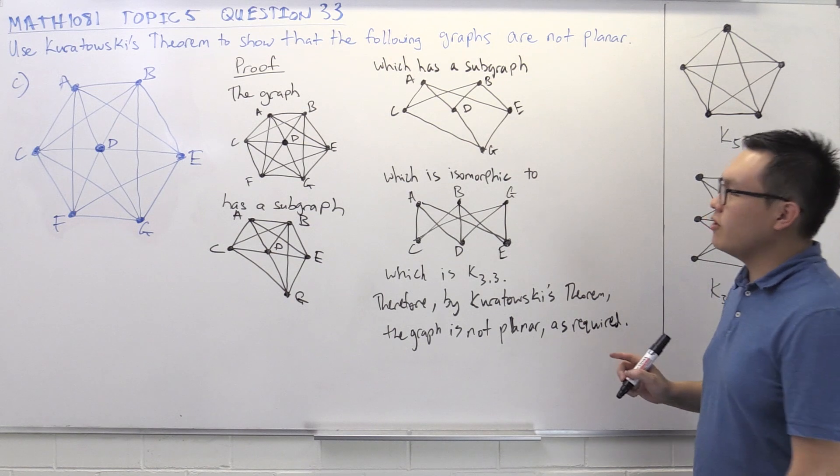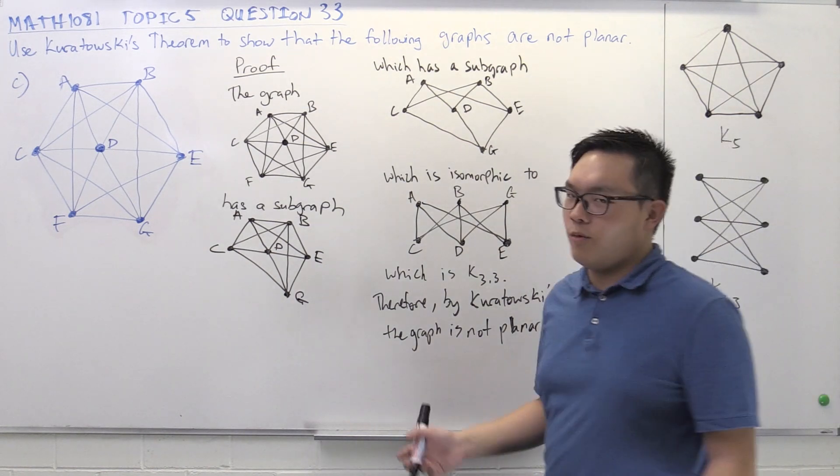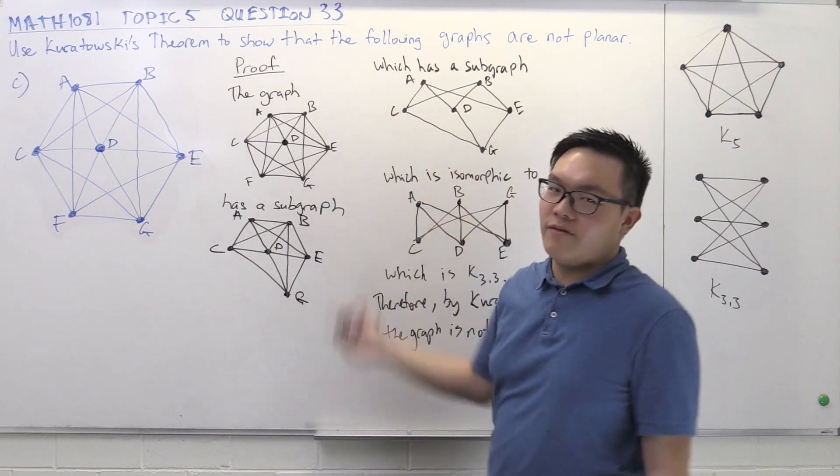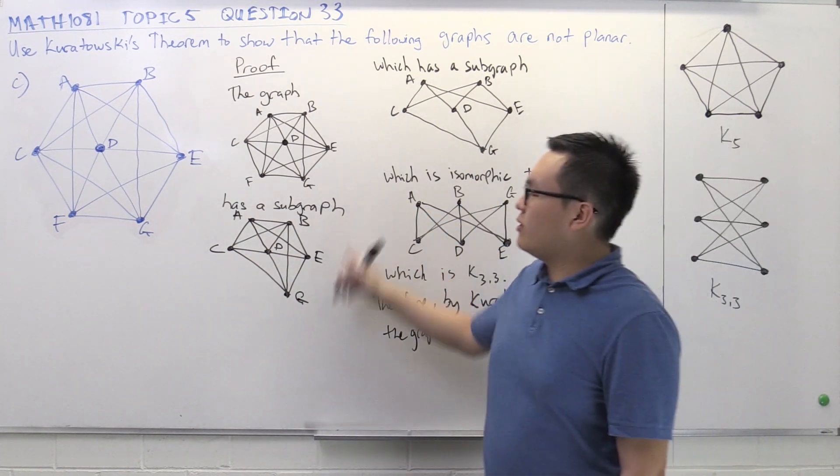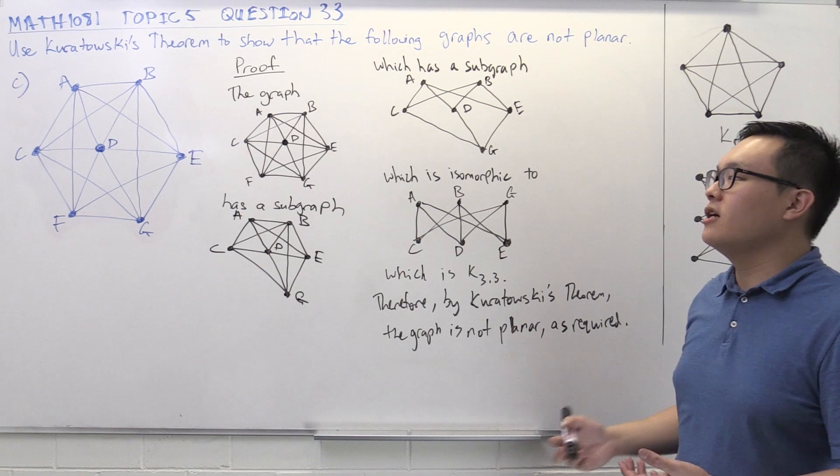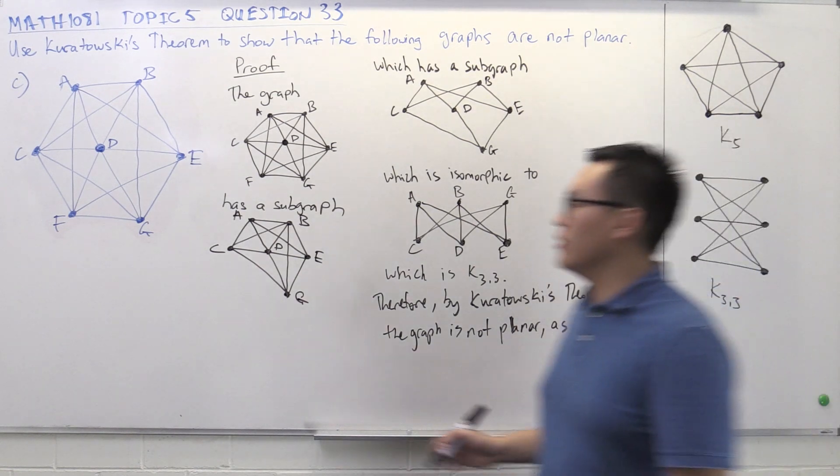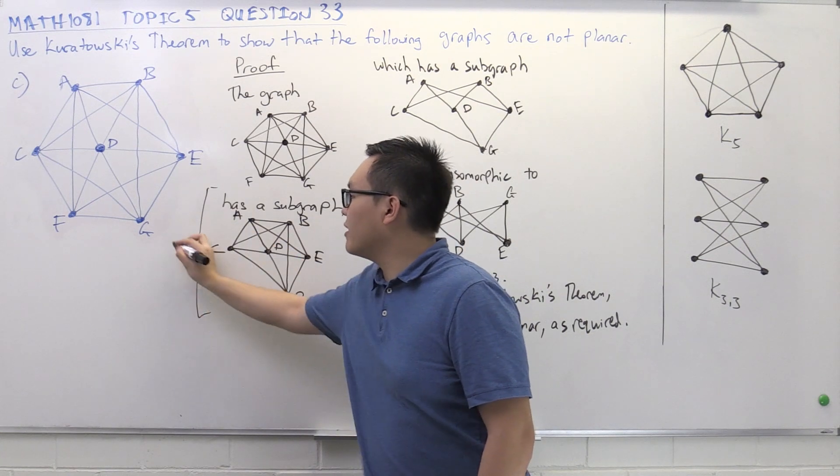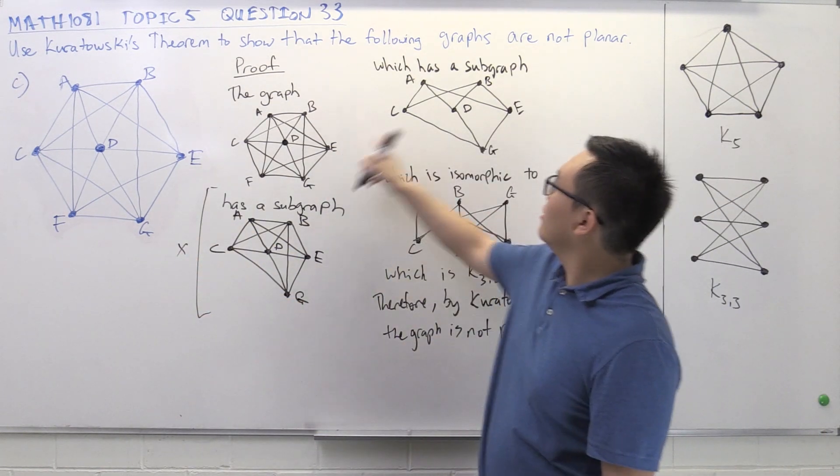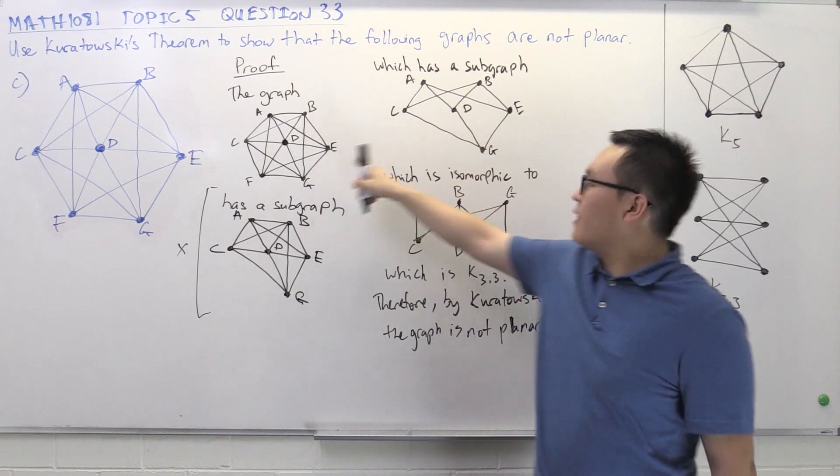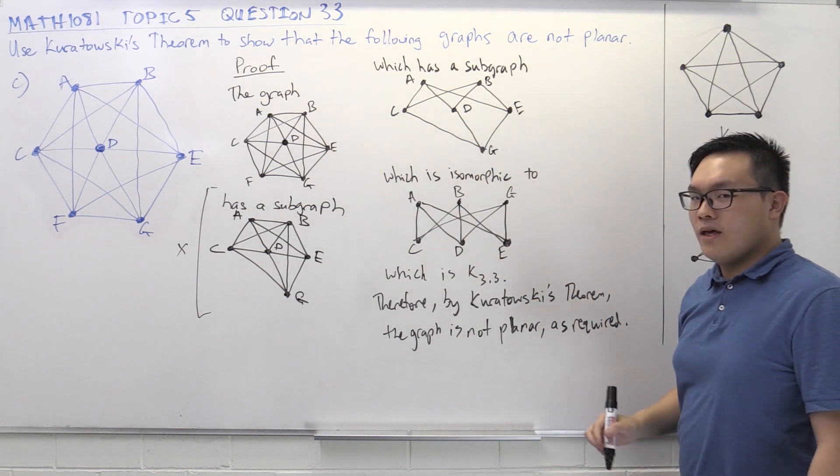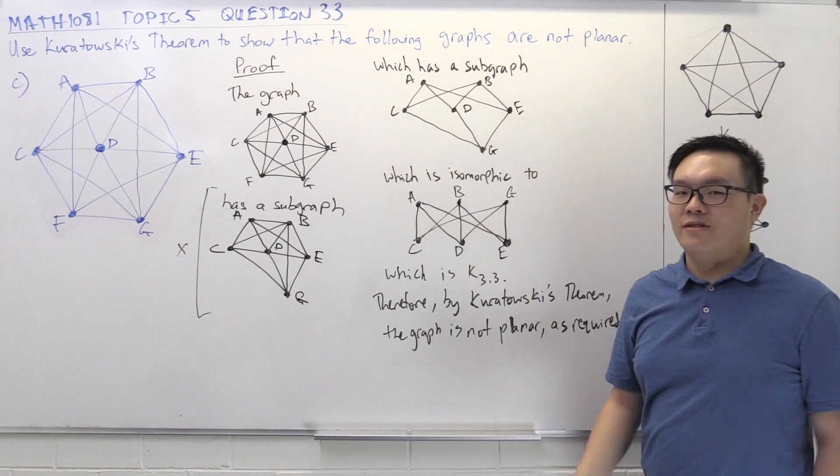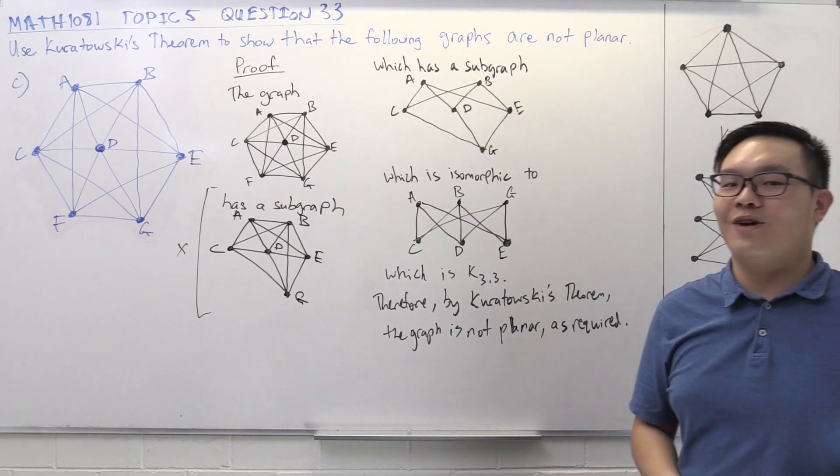So one thing I should point out is that we didn't need this intermediate step in this case. This was only the intermediate step that we needed to sort of see how this proof was going to work. So once we've done our rough working, we actually don't really need to write this step anymore. We could have just gone from here. This is a subgraph of that, and this is K33. So hopefully now you've got a much better understanding of how we can use Kuratowski's theorem to show that a graph isn't planar.